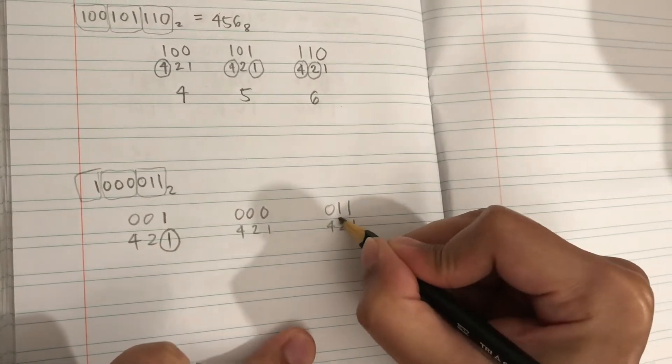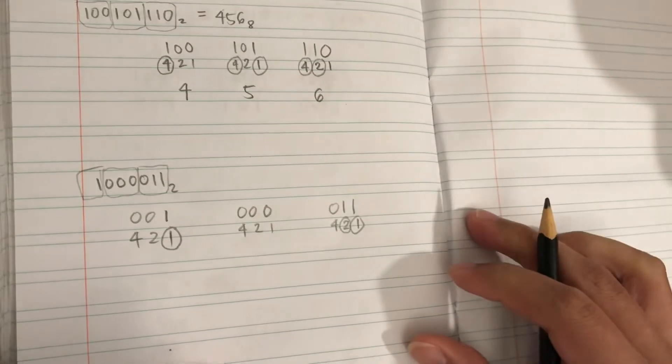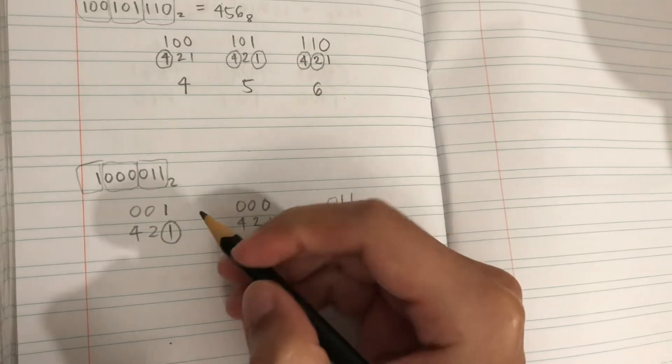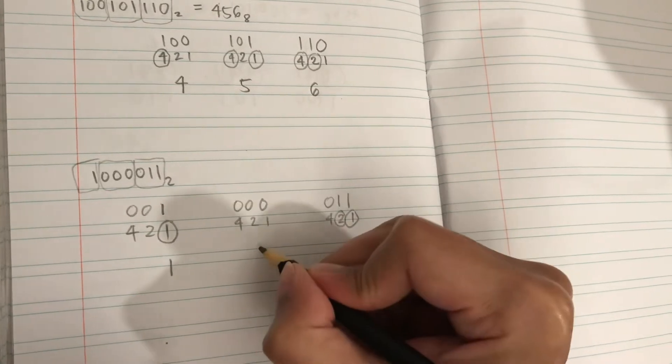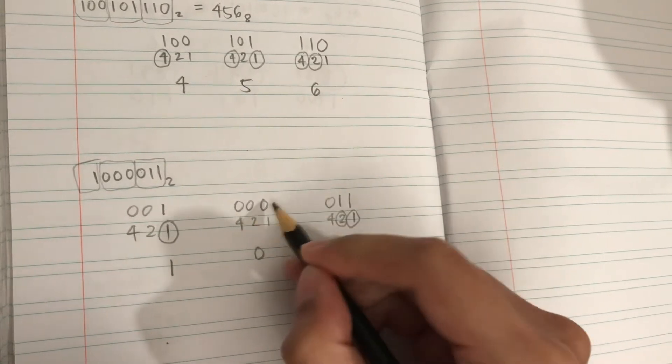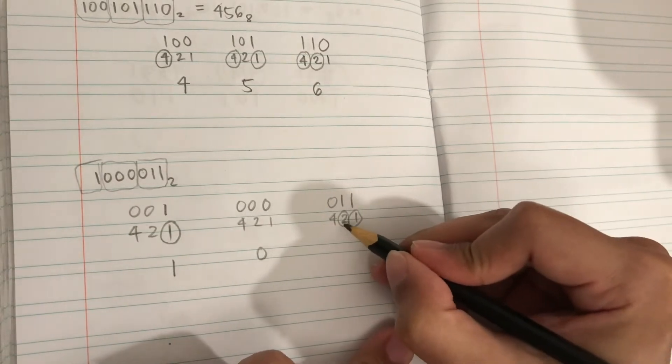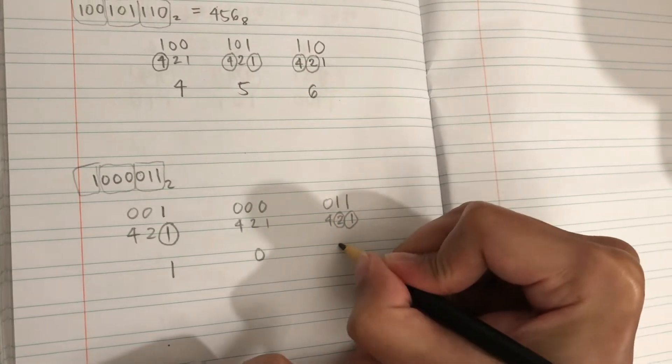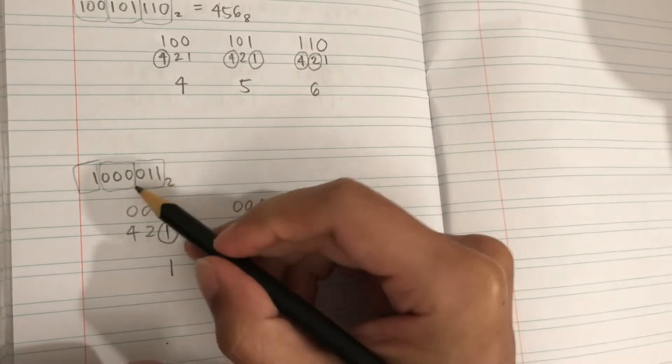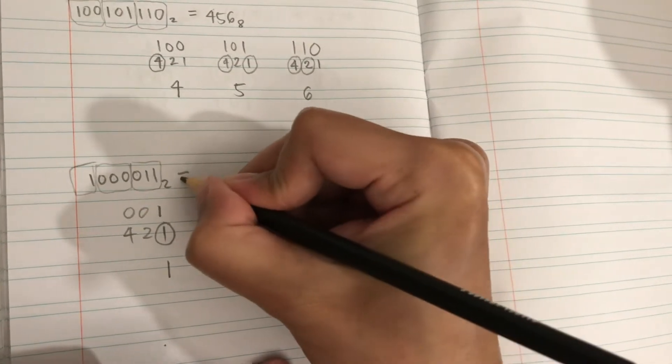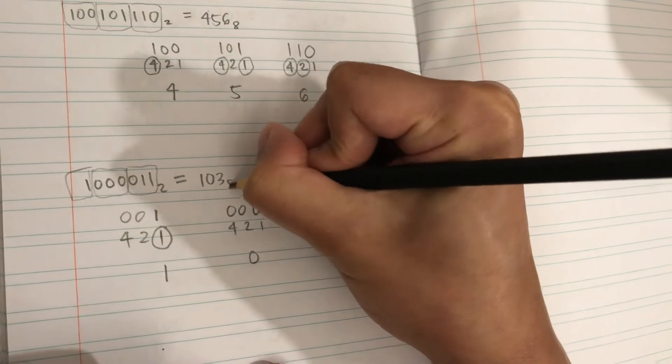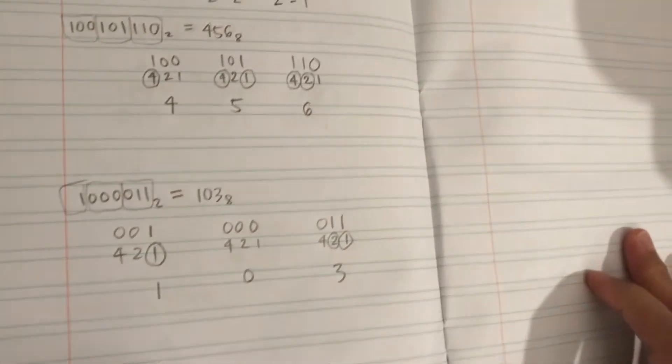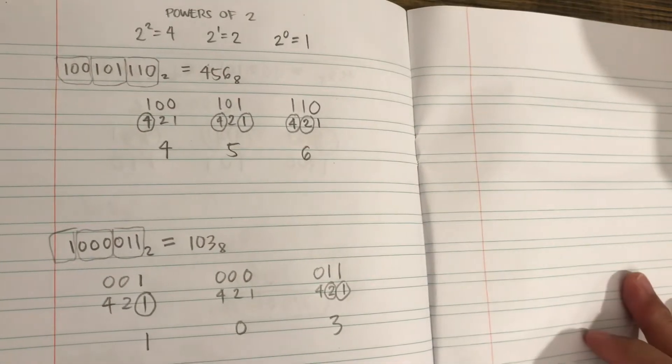We take this one, this, and this. Our first digit is 1, second digit is 0 since all of them are zeros, and the third digit is 2 plus 1, which is 3. So this number equals 103 in octal. That's how we convert binary numbers to octal.